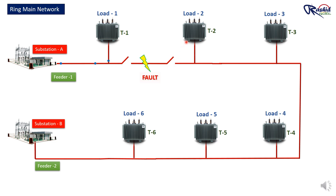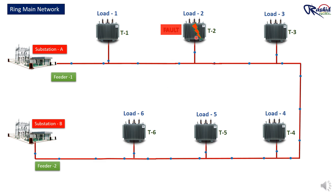When the breaker is off, all transformers after it will shut down. In this case, substation B will start supplying power through Feeder 2, so all transformers can still get power. This is one of the advantages of the ring network. Suppose there is a fault on the load or transformer side — we can turn off the power using the circuit breaker without affecting the feeder. This is another benefit of the ring network.